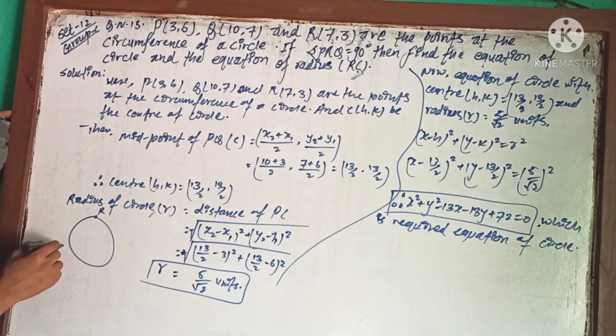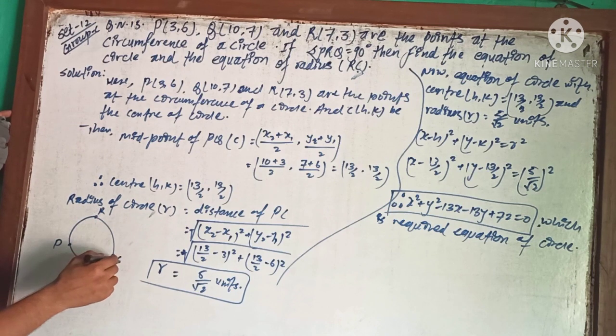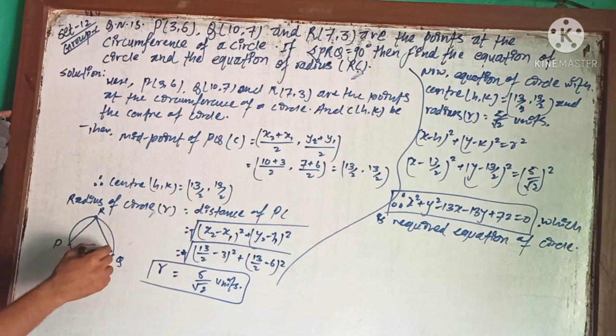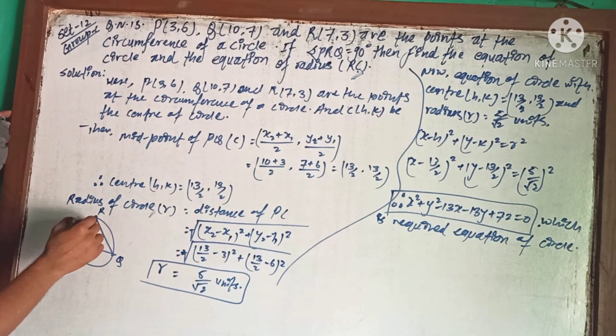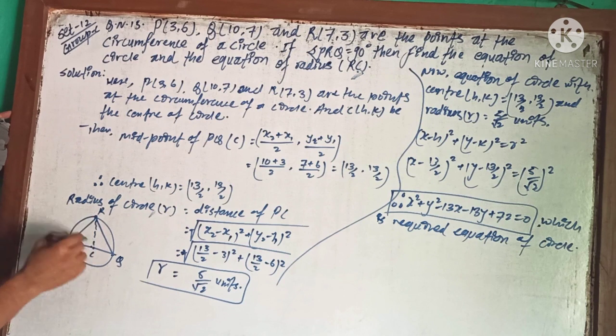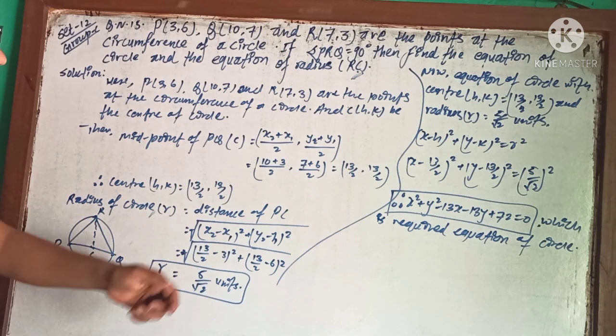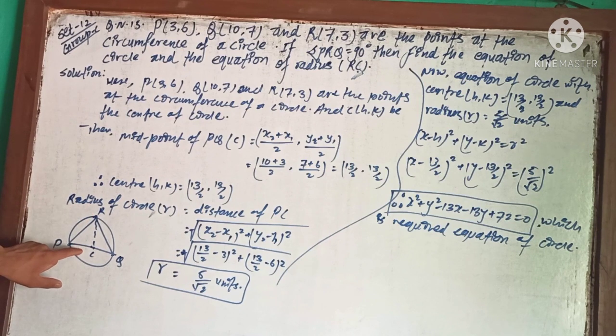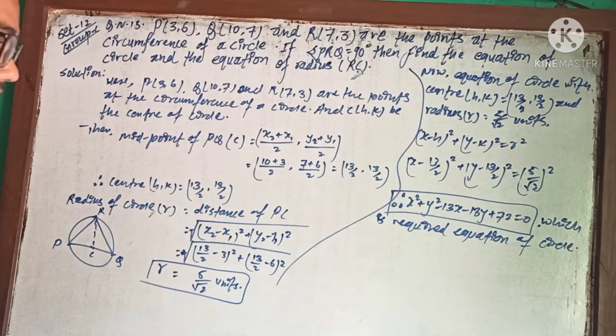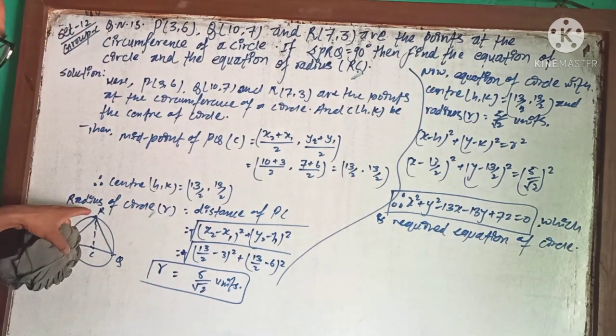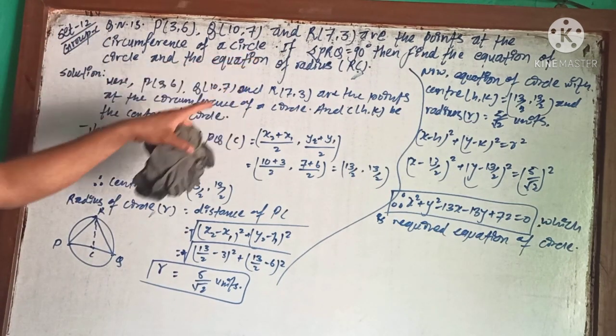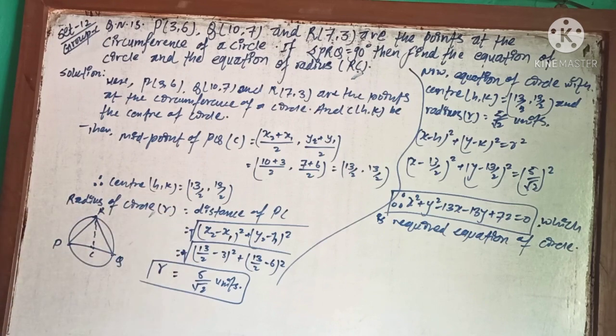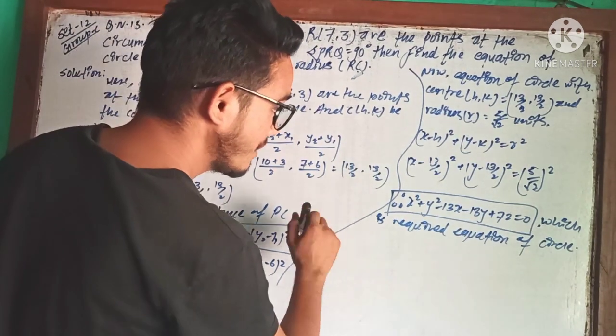Here are points P, Q, and R, and I'll mark point C. We need the equation of line RC, which is the equation of the radius connecting R and C.